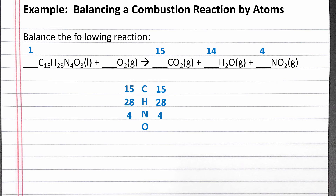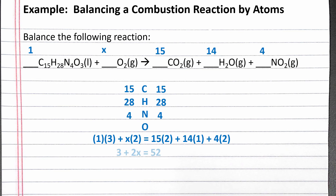Now we just need to solve for the coefficient of O2 gas. We can say the coefficient of O2 is X and then create an equation for the amount of oxygen on each side. On the left, we have 1 times 3 oxygen in C15H28N4O3 plus X times 2 oxygen in O2. That needs to equal the oxygen on the right: 15 CO2 times 2, plus 14 H2O times 1, plus 4 NO2 times 2. On the left we get 3 plus 2X. On the right, combining the multiplication and addition, we get 52. Subtracting 3 from each side, we get 2X equals 49, so X equals 49/2.